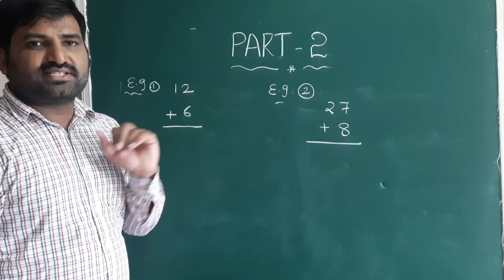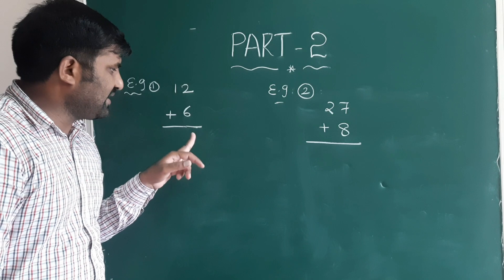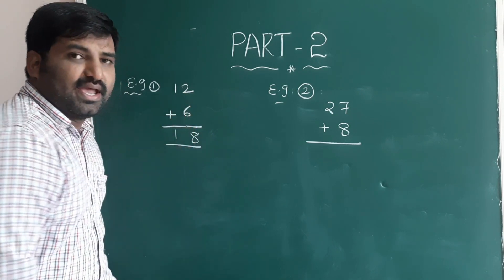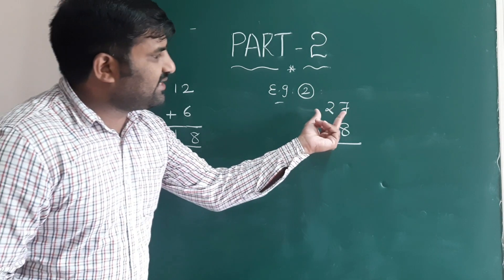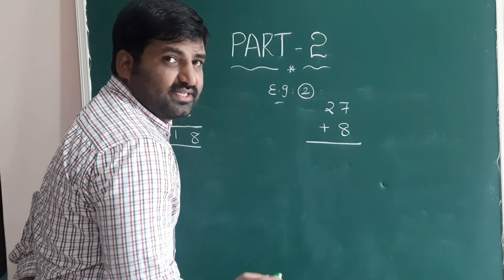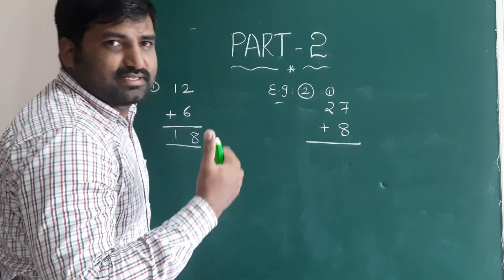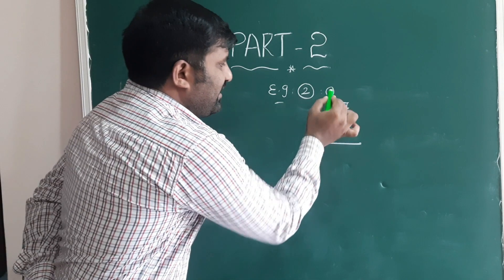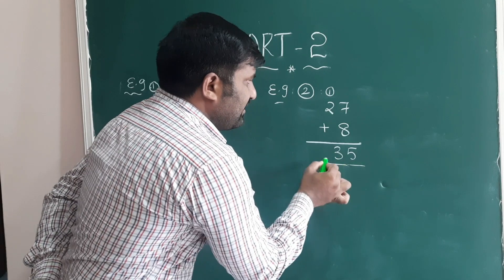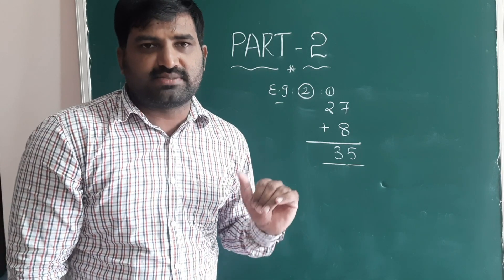First, I will explain how to do addition in general mathematics. We add 2 plus 6 equals 8, and write 1, so 12 plus 6 is 18. Next, in general mathematics for 27 plus 8: 7 plus 8 is 15, so we carry one. Then 2 plus 1 is 3. The sum of 27 plus 8 is equal to 35. This is general mathematics.